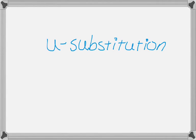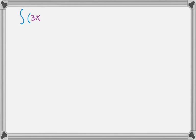Let's talk a little bit about u-substitution. We're going to do a couple of examples. So let's say we have the integral of the quantity 3x minus 2 squared dx. I've color-coded things — we have something squared, so that something being squared I'm going to call u. So 3x minus 2 is going to be u.